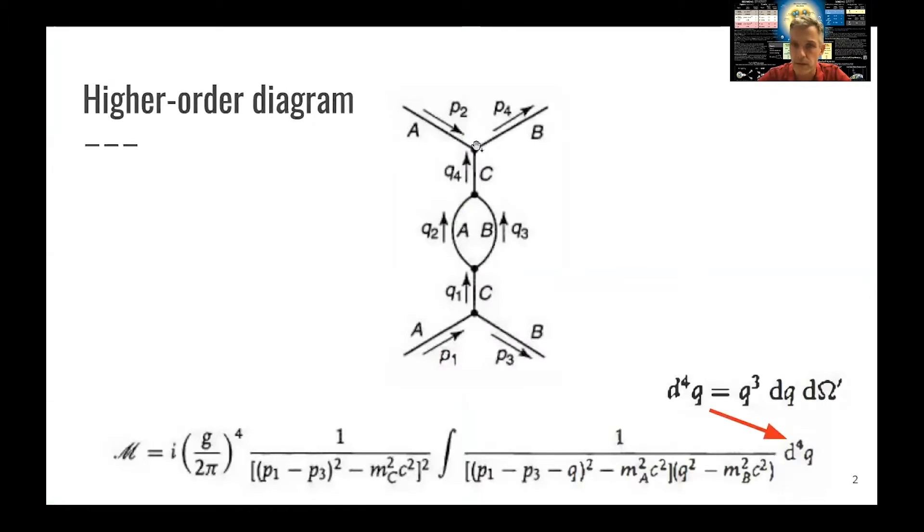If we look at this higher order diagram here, one of the specific ones where we have a self-correction, self-energy correction to the propagator C here, we find this loop here in the middle. And if you were to, and we have all the tools at hand to actually do the calculation, if you were to calculate the amplitude, you find this term here.